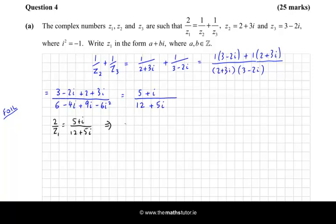So my equation is 2 over z₁ is equal to 5 plus i over 12 plus 5i. That's going to become 2 over a plus bi, and the right-hand side stays the same. Now whenever you have two fractions that are equal to each other, a useful thing to do is to cross-multiply. So that's what I'm going to do here.